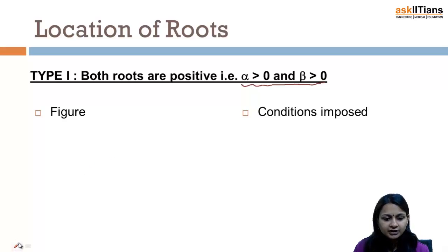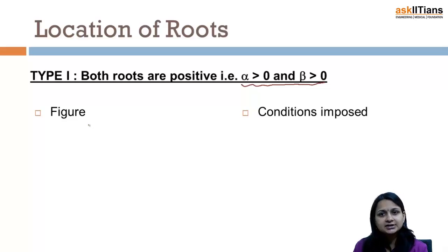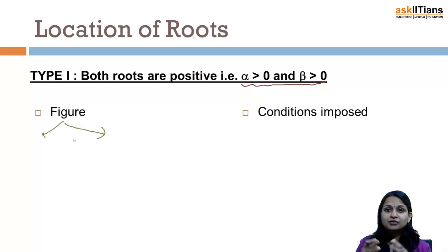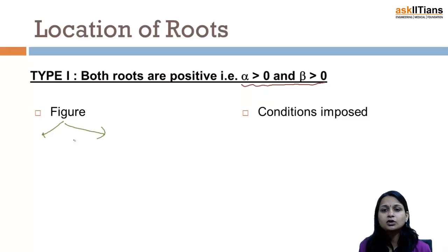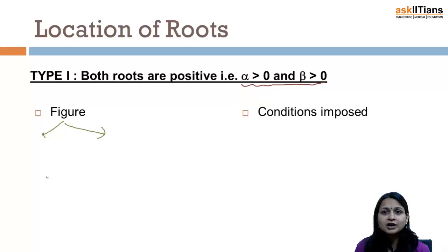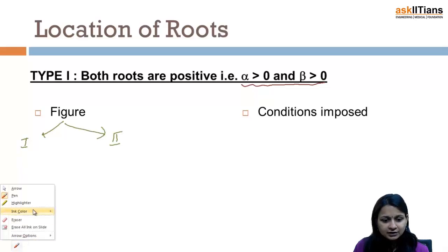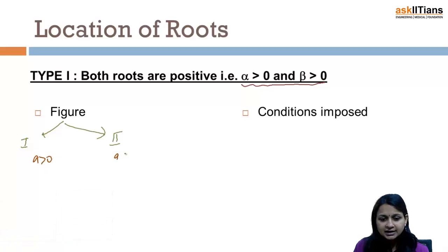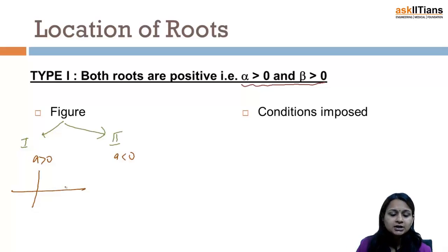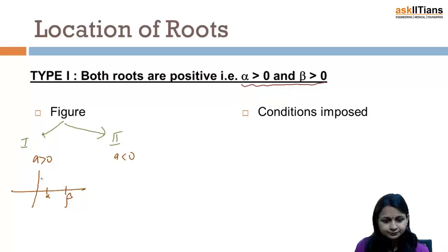When drawing the figure we have to be careful. First, we think about whether a is greater than zero or less than zero — the coefficient of x squared. Since nothing is given here, we make two cases. In most questions the coefficient will be given, so don't worry. In the first case, a is greater than zero, meaning the parabola mouth is upwards. When both roots are positive, with alpha and beta, the graph will look like this. When a is less than zero, the parabola mouth is downwards and the graph will look like this.